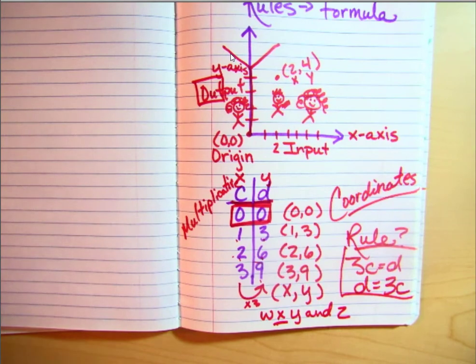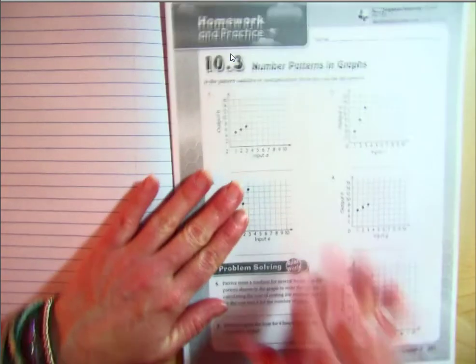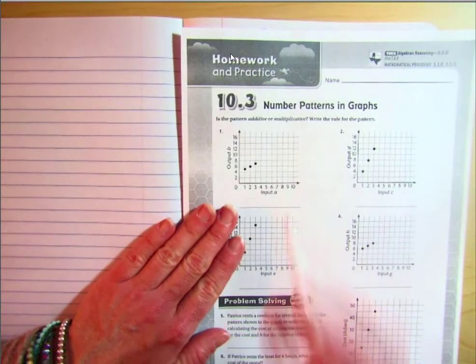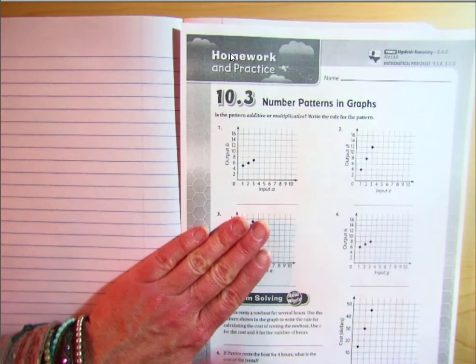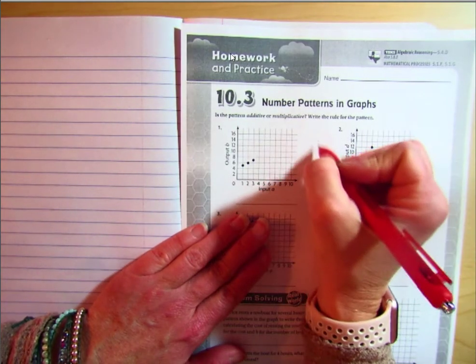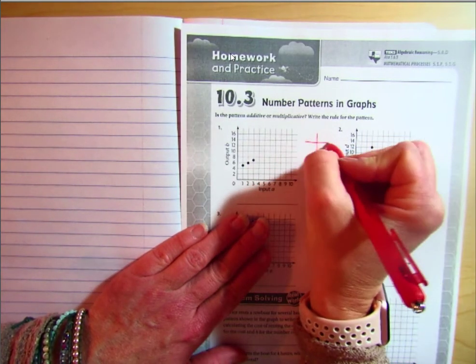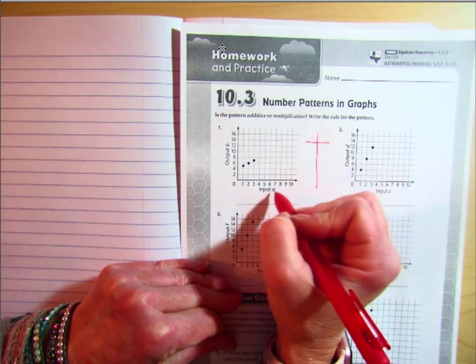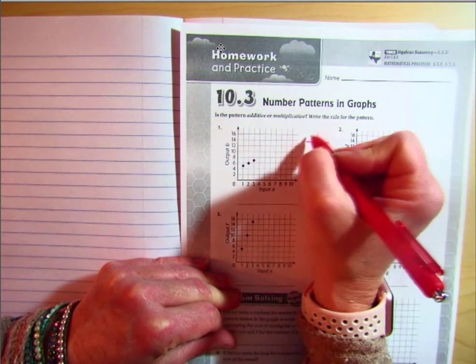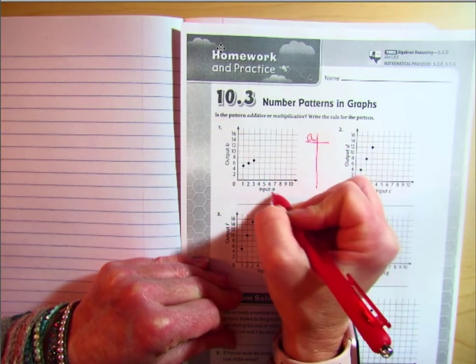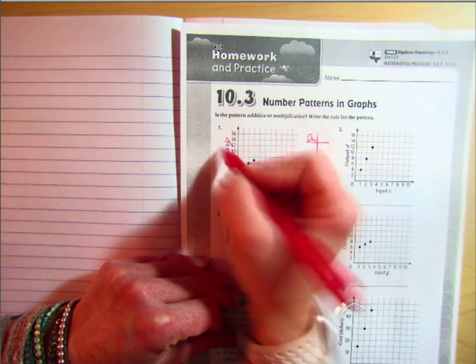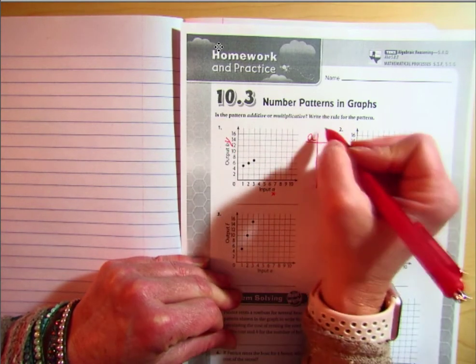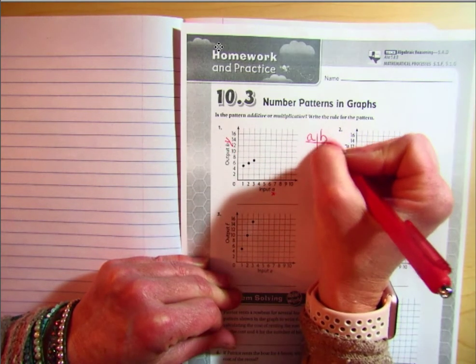Just to show you an example here, and we're going to work through this together. When I have a graph without a table, my number one rule is to make the table. It has input A and output B. I'm still seeing x and y, but for this, they want you to write with the variables A and B. So I'm going to play along: A and B.